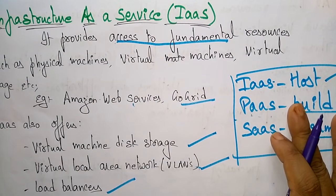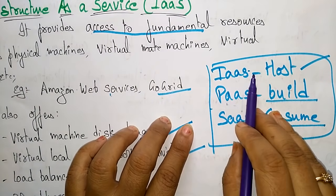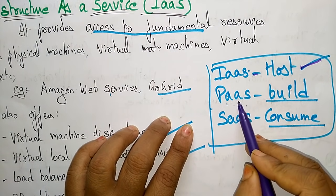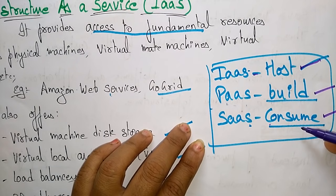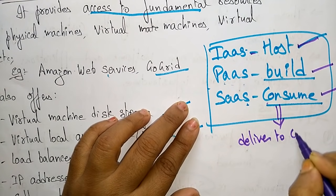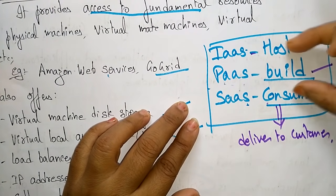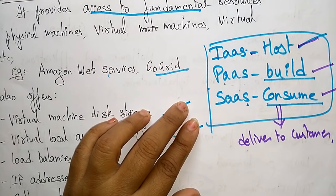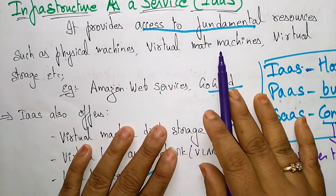Now let us look at Infrastructure as a Service in detail. Before that, let us remember: IaaS, PaaS, and SaaS. Infrastructure as a Service acts like a host, Platform as a Service is to build, and Software as a Service is to consume — whatever is built is consumed by SaaS and delivered to the customer. So IaaS is a host, PaaS is to build, and SaaS is to consume. These three terms should be remembered so you can clearly understand what these three services provide to customers.